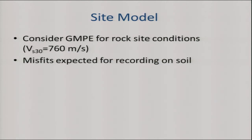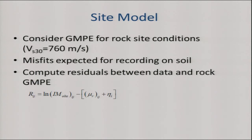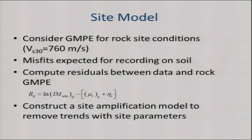Here's how we did it: we took a GMPE for rock conditions — an interim version of the Campbell and Bozorgnia GMPE — and computed the ground motion expected at each site using 760 m/s, not the actual VS30 of that site. So we expect a mismatch. We then computed residuals in log units — the difference between the observation and this median, corrected by an event term to account for events that are unusually high or low — and constructed a site amplification model to remove the trends.